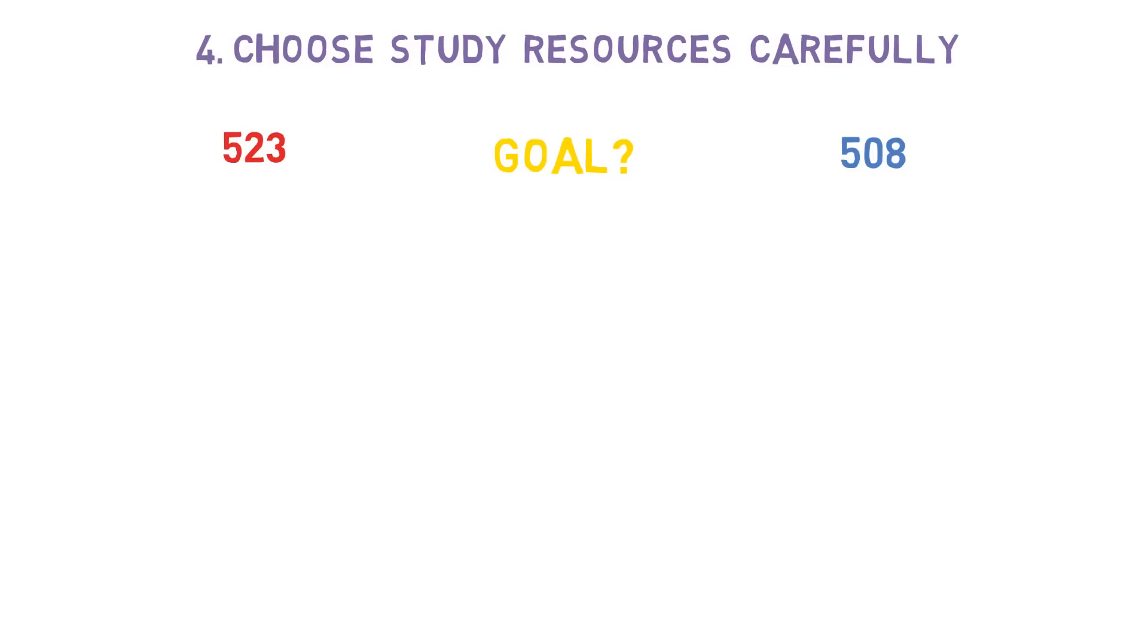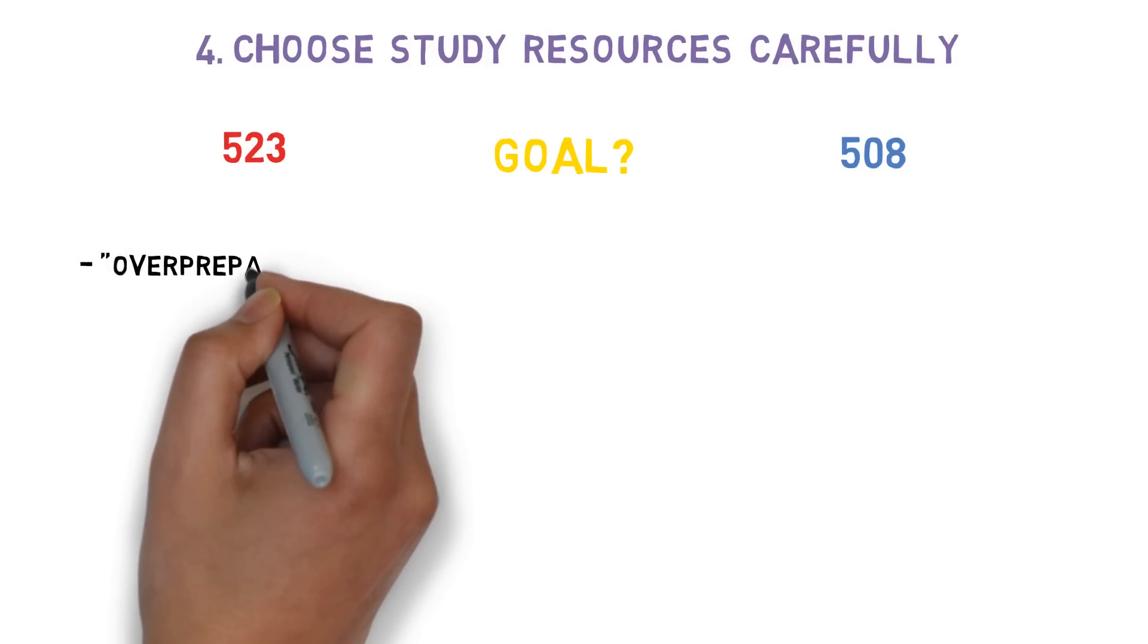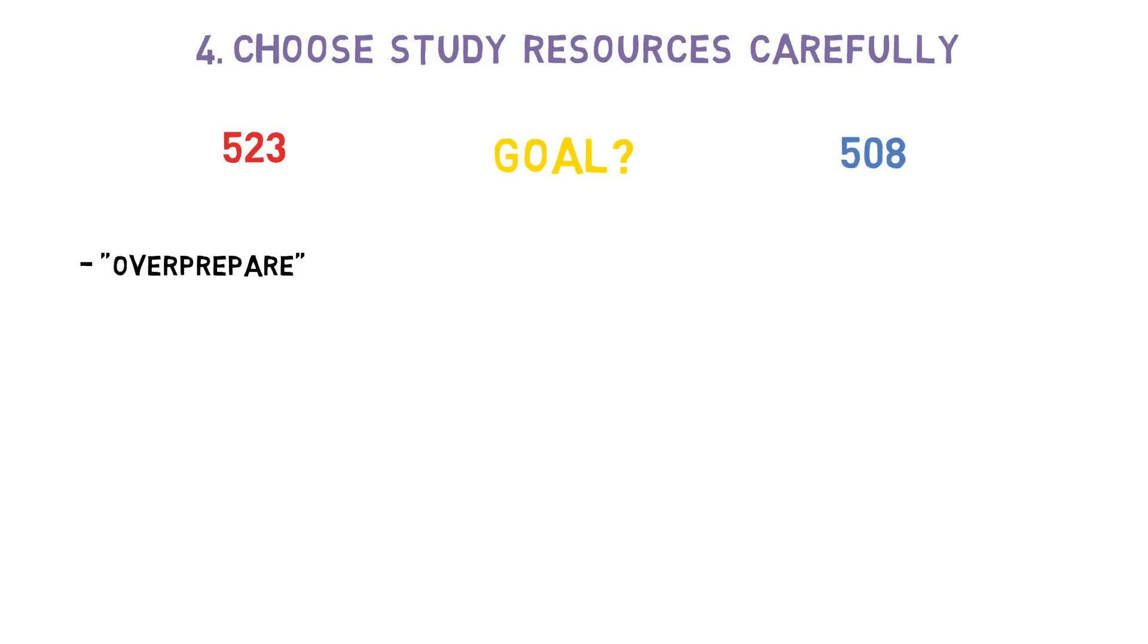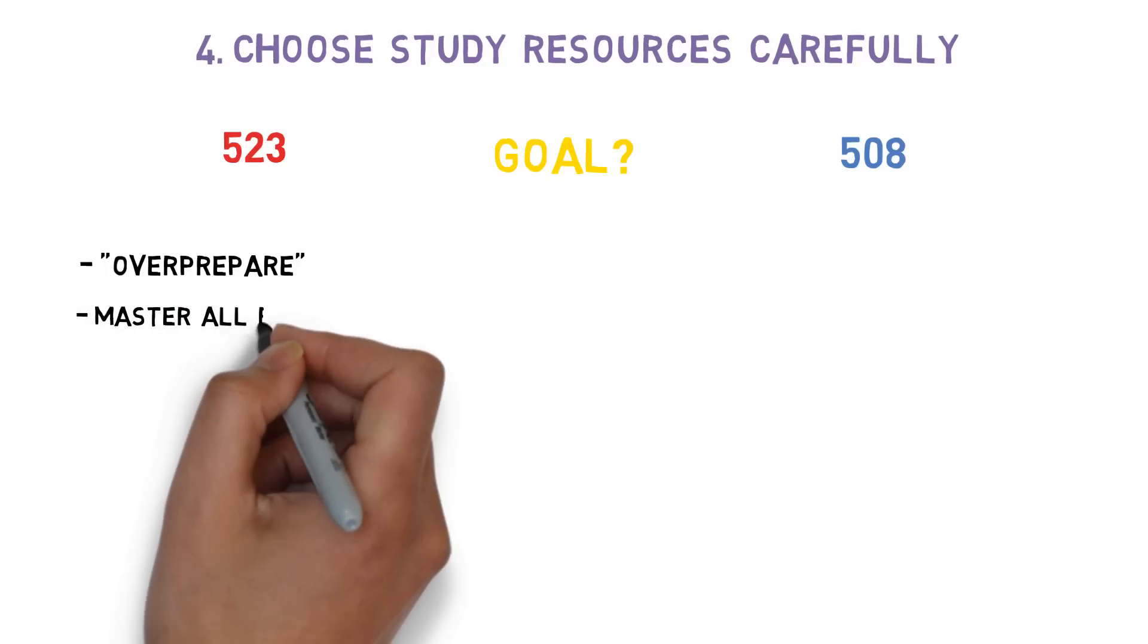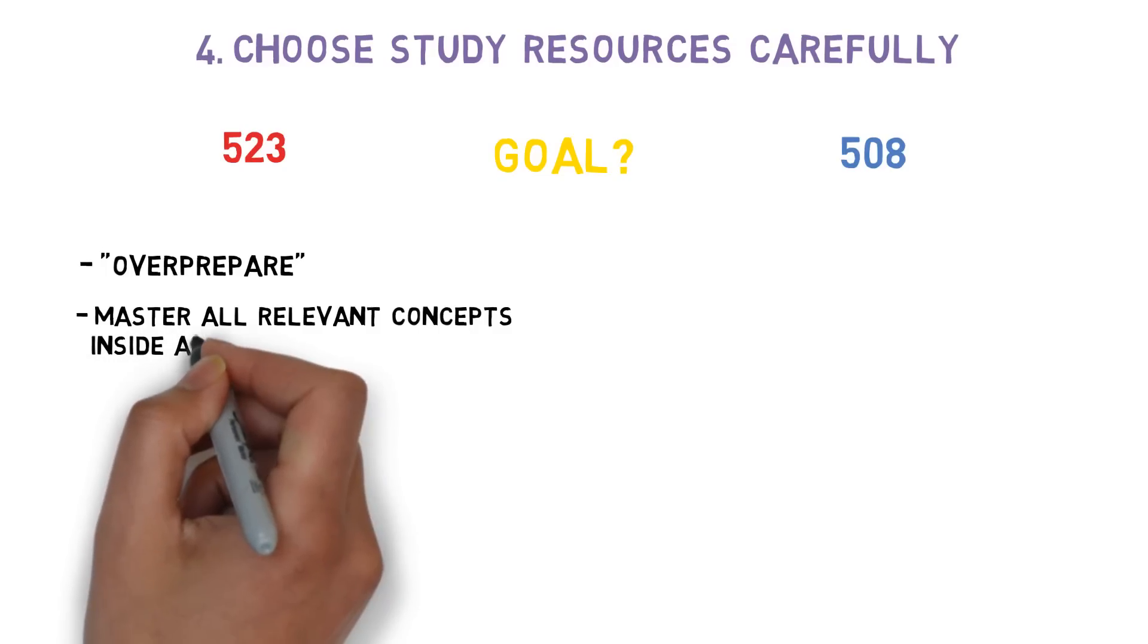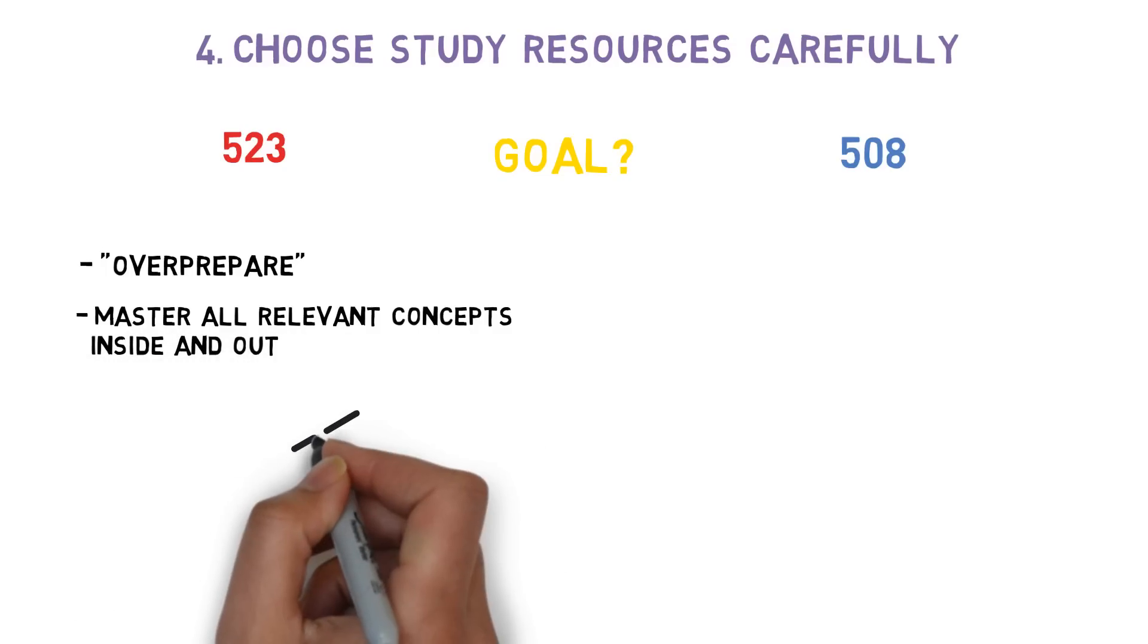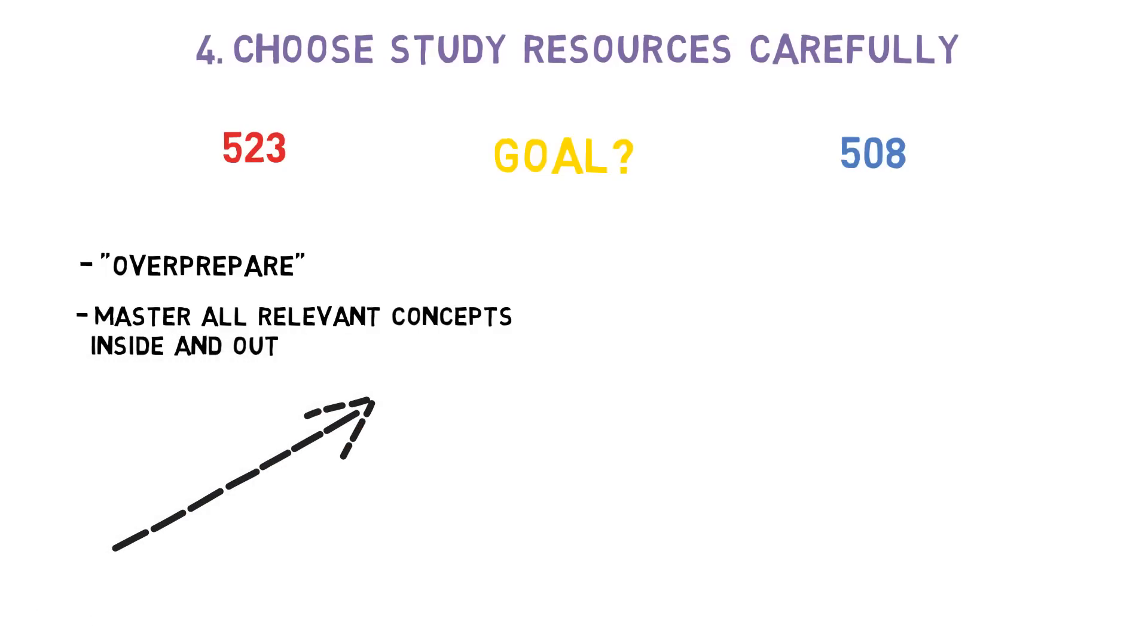Your goals will dictate your study approach and the resources you should use. If you're aiming for a top score, you should over-prepare. I'm not saying waste your time studying things that aren't relevant. Instead, aim to master every concept that is high yield. This strategy will take you a longer time and your increase in your score will be slower, but your top potential score will ultimately be higher.